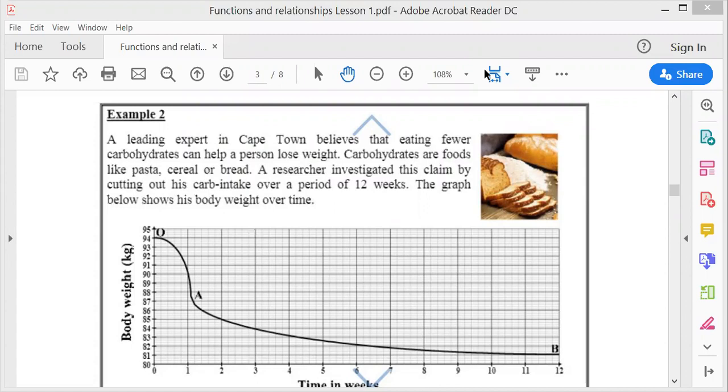Now a leading expert in Cape Town believes that eating fewer carbohydrates can help a person lose weight. Carbohydrates are food like pasta, cereals, or bread. A researcher investigated this claim by cutting out his carb intake over a period of 12 weeks. The graph below shows his body weight over time.